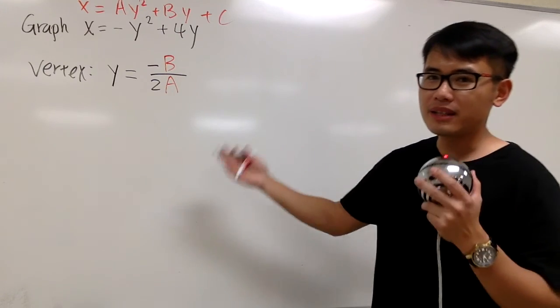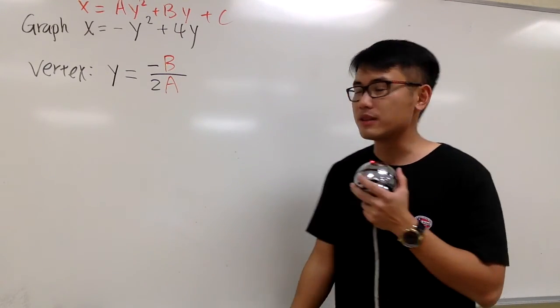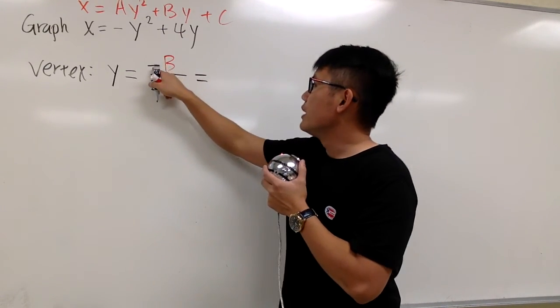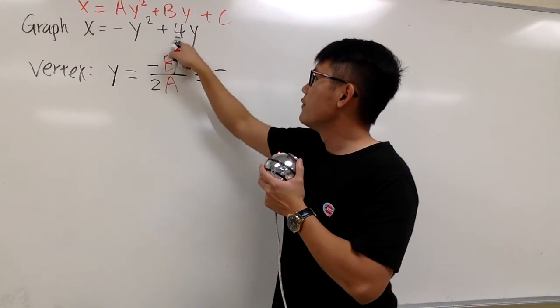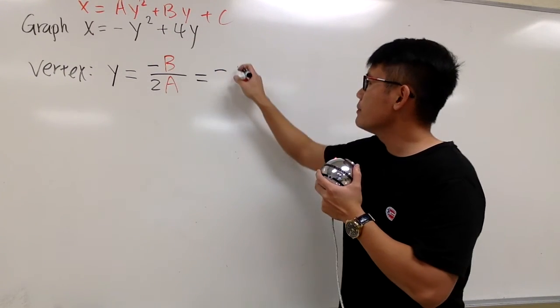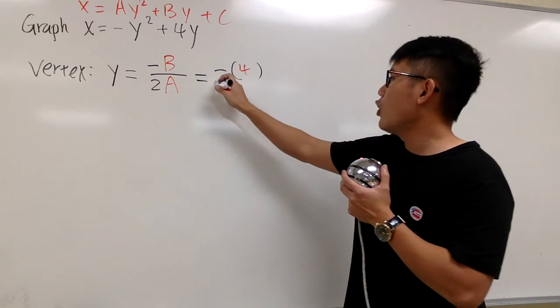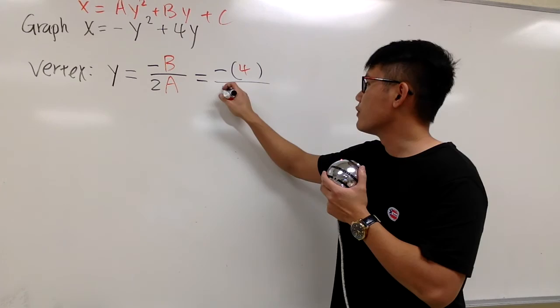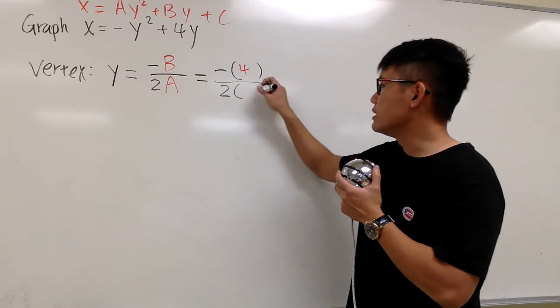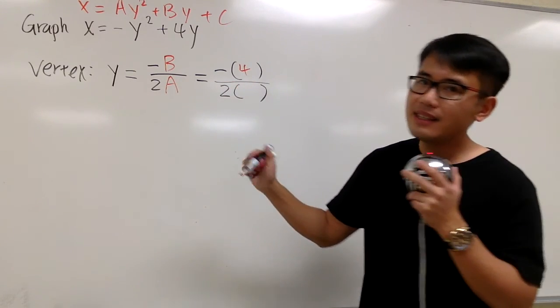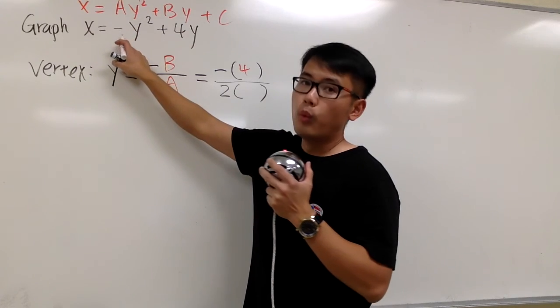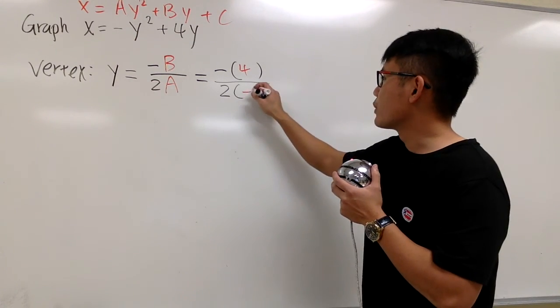And now we just have to plug in the value to get the vertex. Right here, we have the negative, and then the B is 4, and it's a positive 4. So I'll put a parenthesis, B is positive 4, over this 2 from the formula. And I will open the parenthesis for A, and A is negative 1.